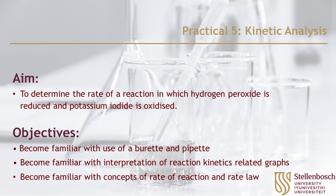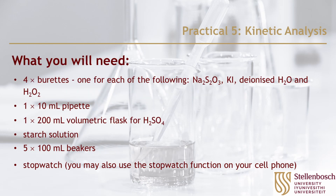The aim of this experiment is to determine the rate of a reaction in which hydrogen peroxide is reduced and potassium iodide is oxidized. This will be done by becoming familiar with different apparatus, plotting and interpreting graphs, and by becoming familiar with the rate of a reaction and its rate law.